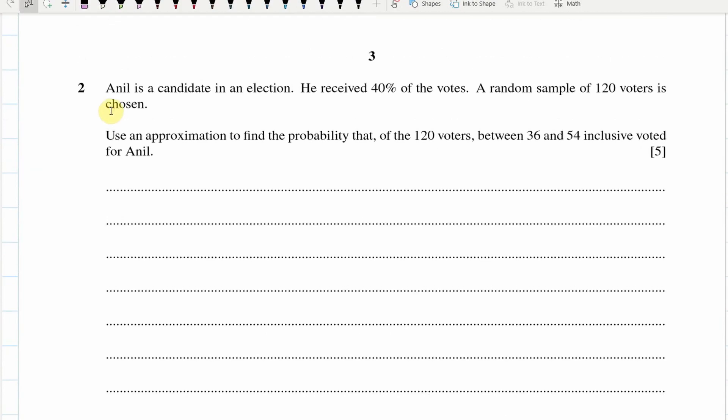Aneel's a candidate in an election, he received 40% of the votes. Random sample of 120 voters. Oh, approximation, probability that between 36 and 54 voted for Aneel. Okay, so a couple of things here. This here is telling me normal approximation of binomial.